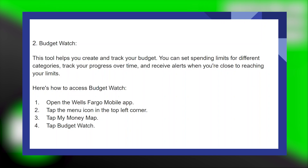Here's how to access Budget Watch. Open the Wells Fargo mobile application. Tap the menu icon in the top left corner. Then tap on My Money Map. Now tap on Budget Watch.